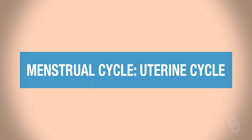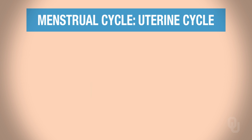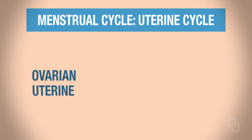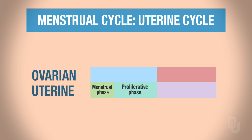Let's look at the uterine cycle. Remember we have two cycles: the ovarian cycle and the uterine cycle. The uterine cycle occurs in concert with the ovarian cycle. I introduced you to the phases of the uterine cycle earlier. Recall that they are the menstrual phase, the proliferative phase, and the secretory phase.